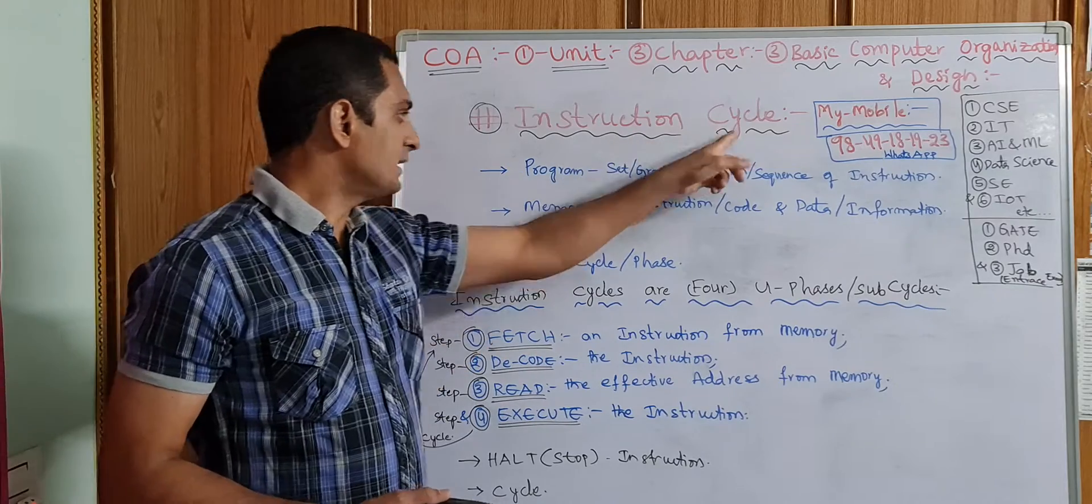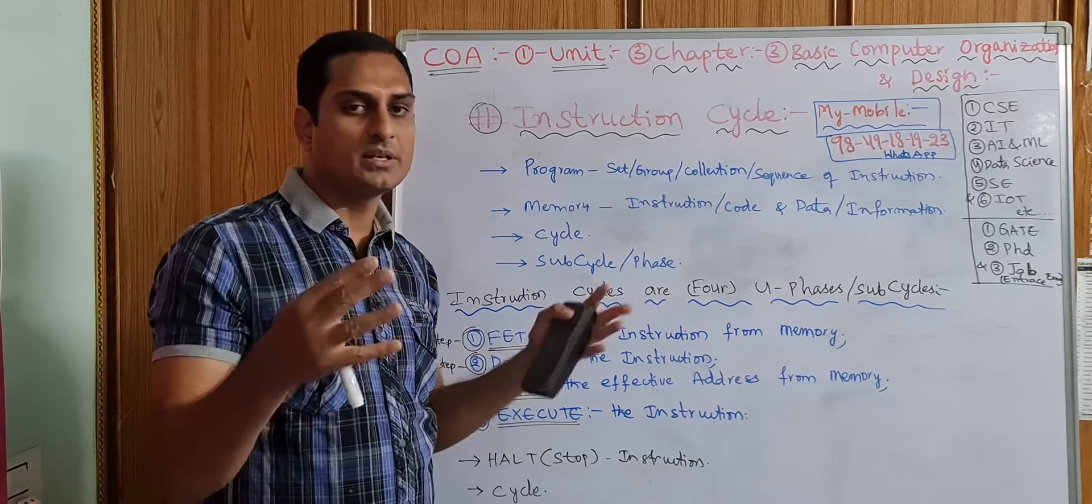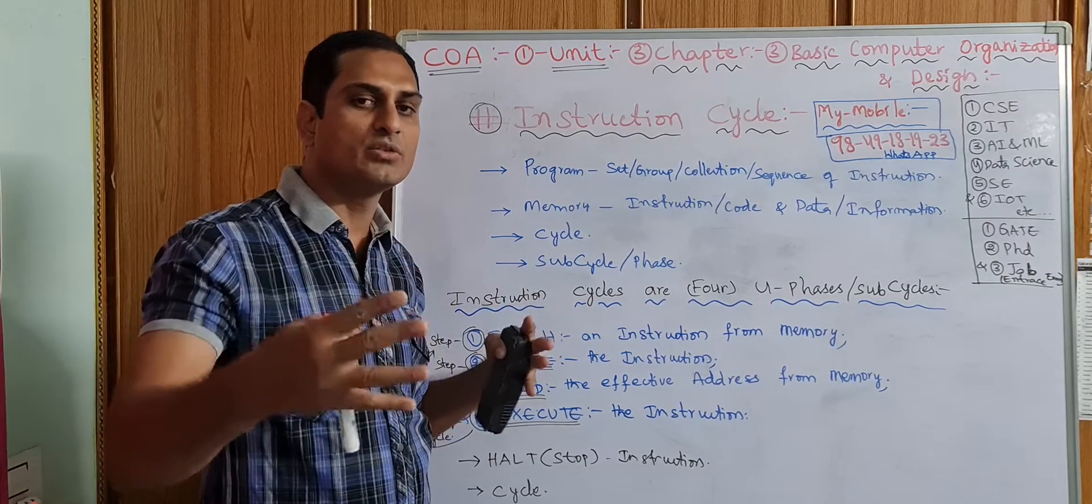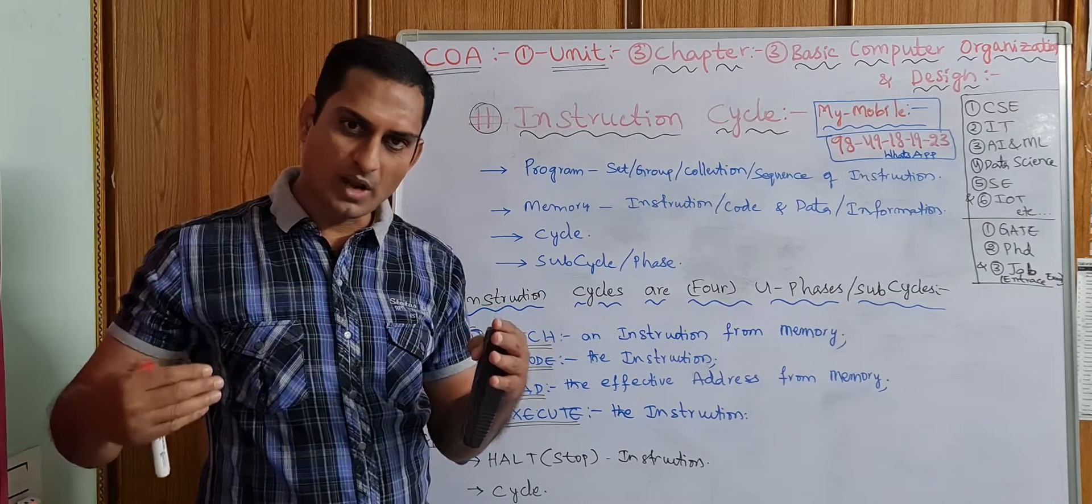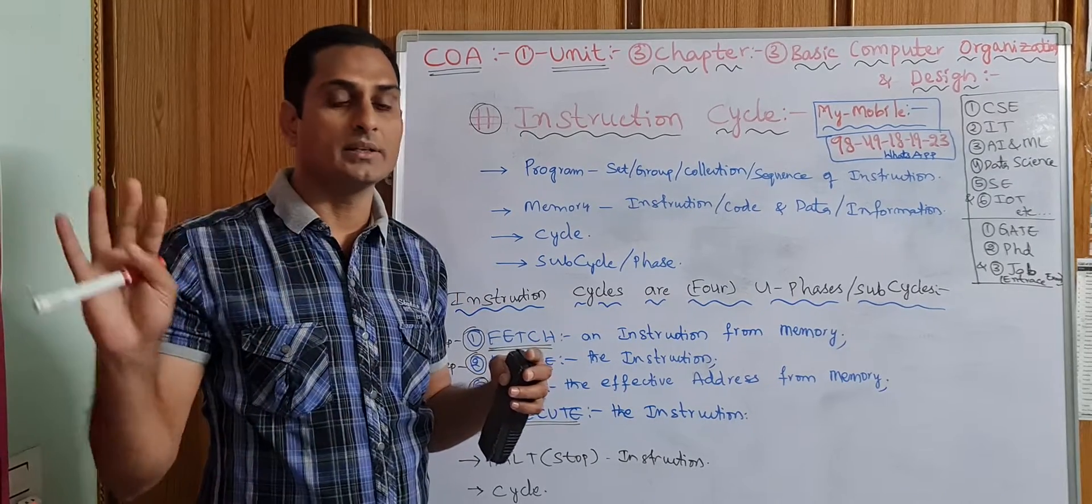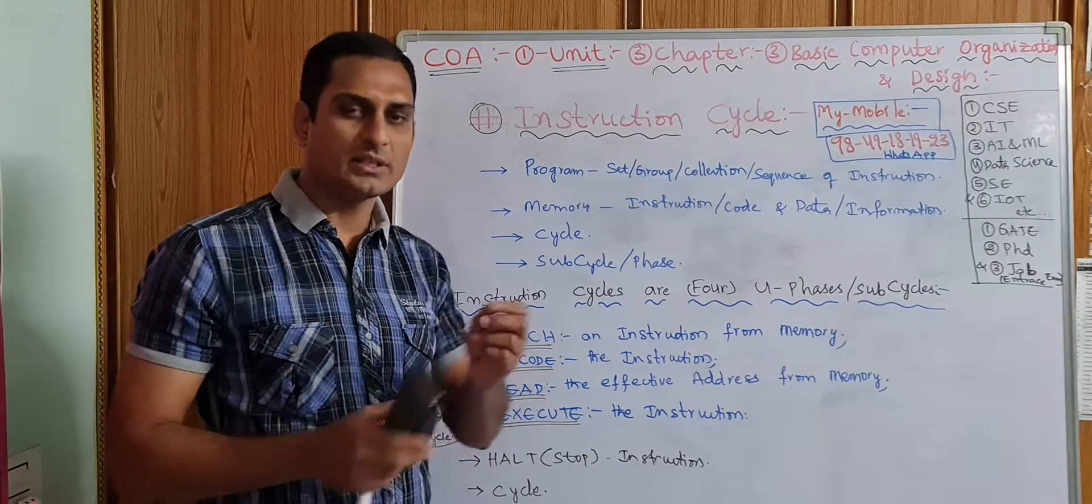Why is it called a cycle? Instruction cycle. Because we have so many instructions. If you want to perform an operation, we need to have so many instructions should be executed one by one. After execution of the last, again we need to go back until the work should be done, until the task of the end user should be done.